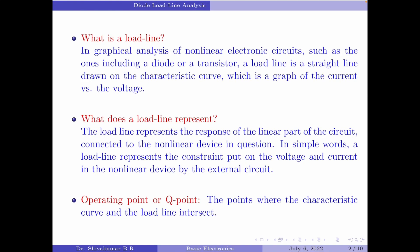Coming back to the definition of load line, we can define it in simple words as a line that represents the constraint put on the voltage and current in the non-linear device by the external circuit. The point where the characteristic curve and the load line intersect — the possible operating points — are called Q points. It is at these points that the current and voltage parameters of both the linear and non-linear parts of the circuit match.